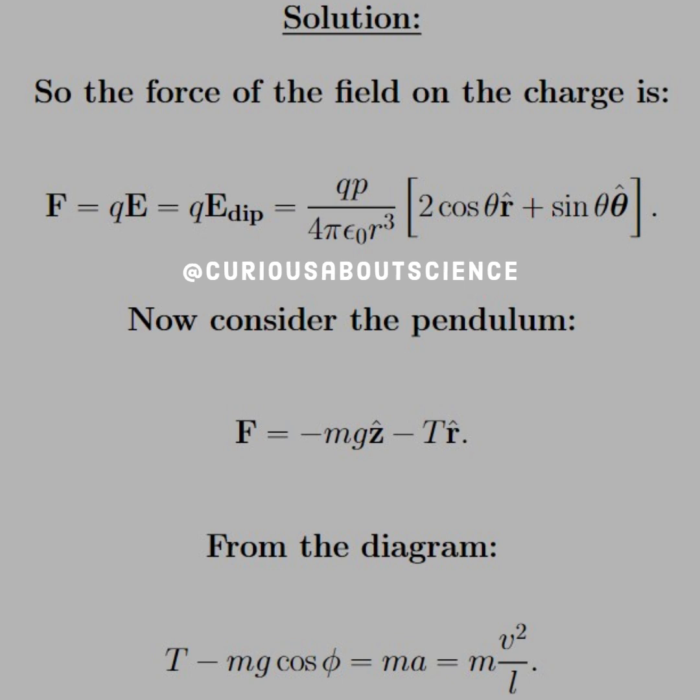Since we have the force on Q, we need to now consider the pendulum. From the free body diagram, we see that F is equal to negative Mg Z hat minus T R hat. But also from the diagram, we know that T minus Mg cosine phi equals M A. However, since we know it's a pendulum moving in circular motion, A is actually a centripetal acceleration. That centripetal acceleration is V squared over L.